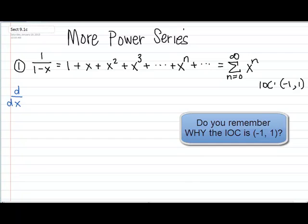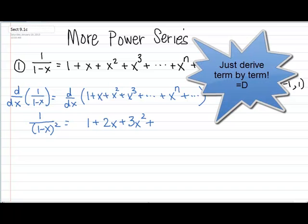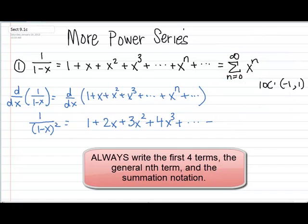So what I want to do next is take the derivative of 1 over 1 minus x. We're going to get 1 over (1 minus x) squared. Because this series is 1 plus x plus x squared plus x cubed and so on, the derivative of the series will also represent this function. If I take the derivative of 1, I get 0. The derivative of x is 1, then 2x, then 3x squared.